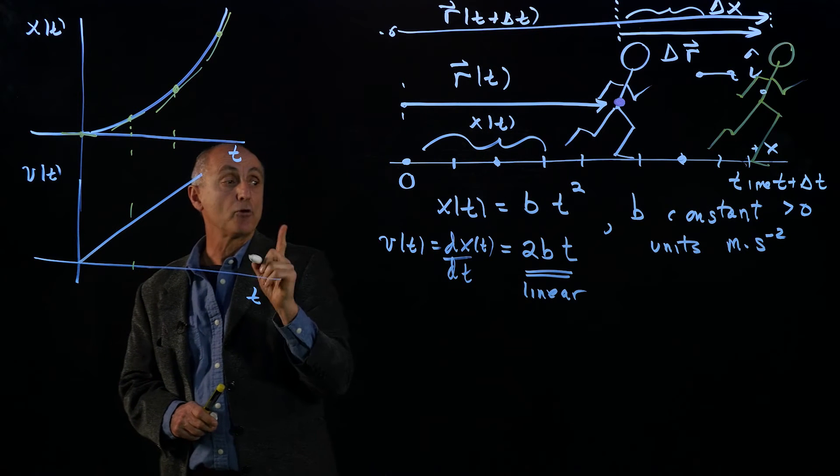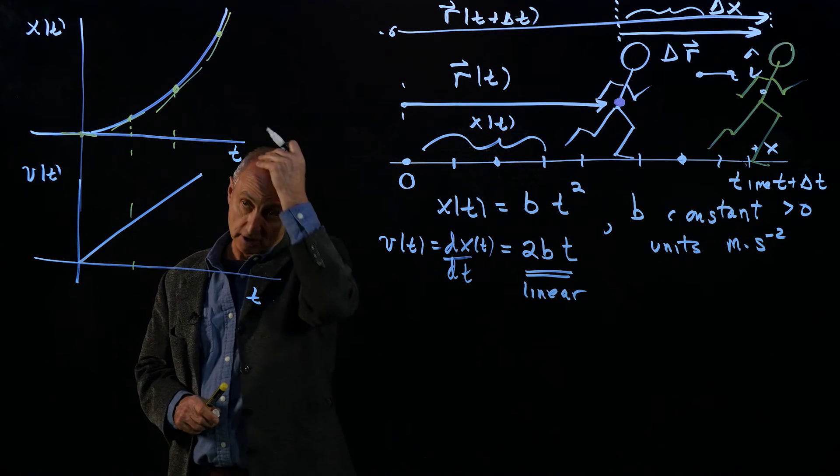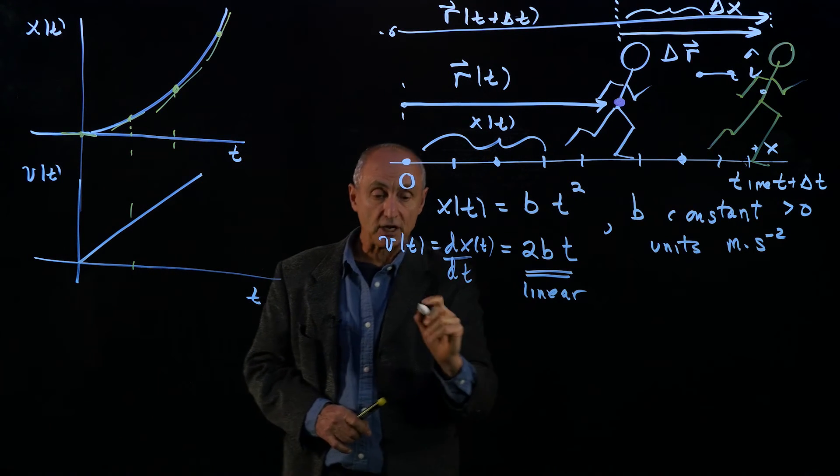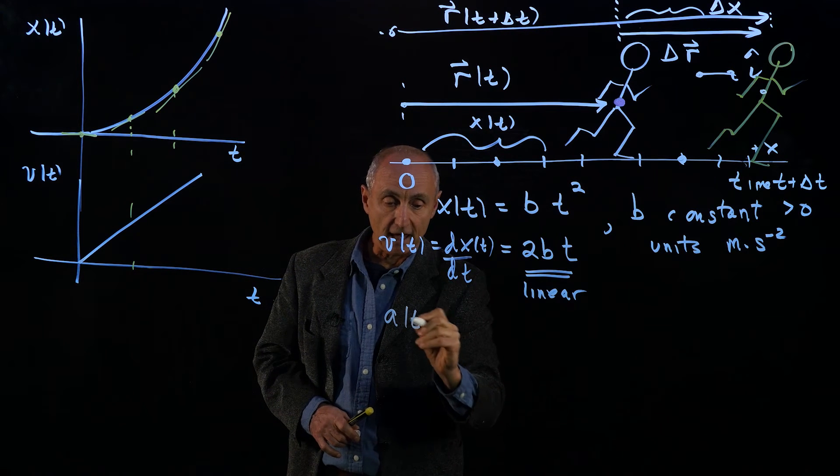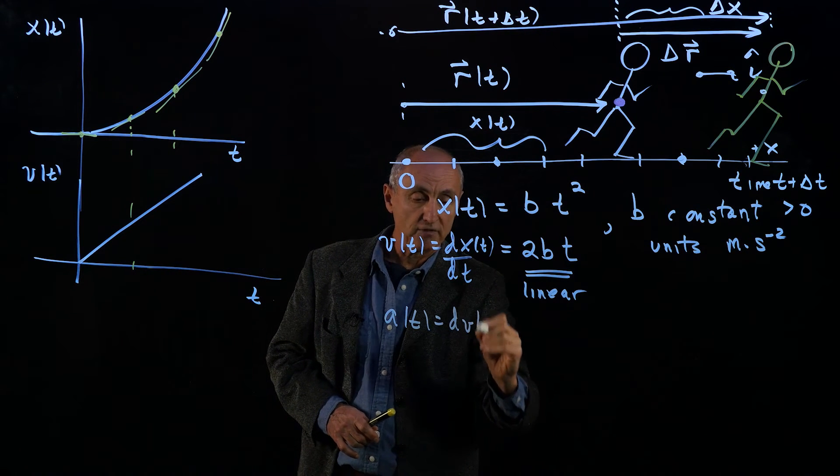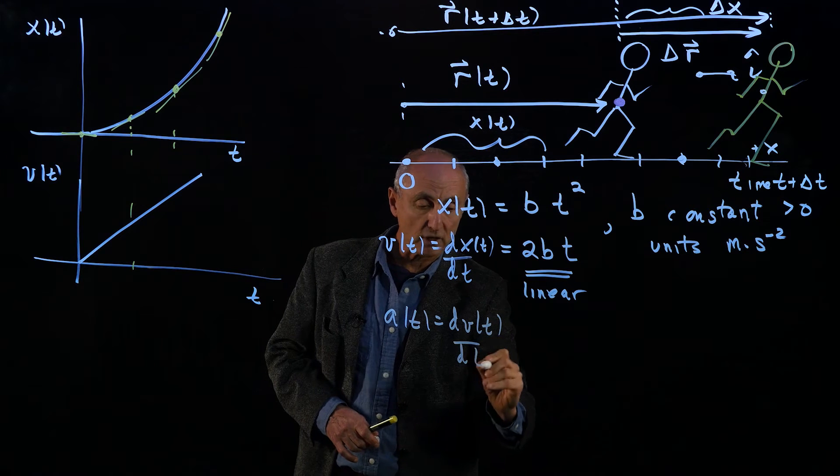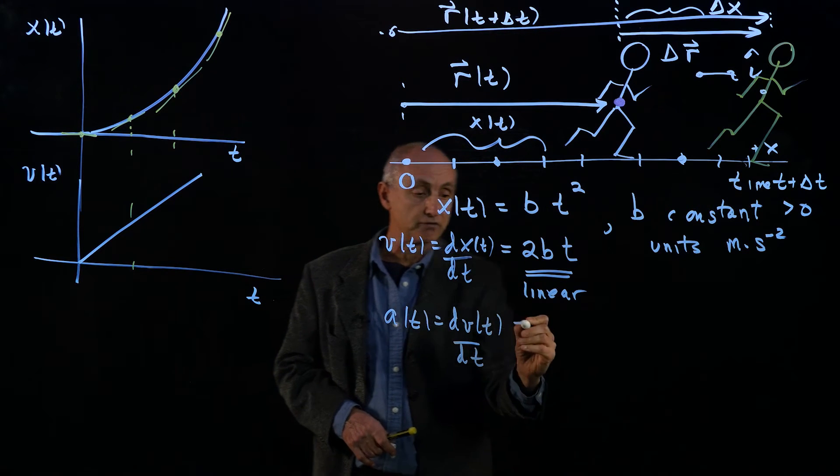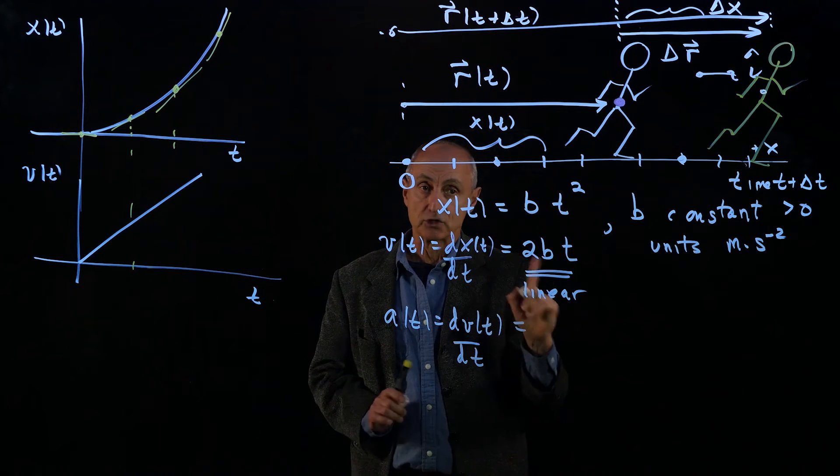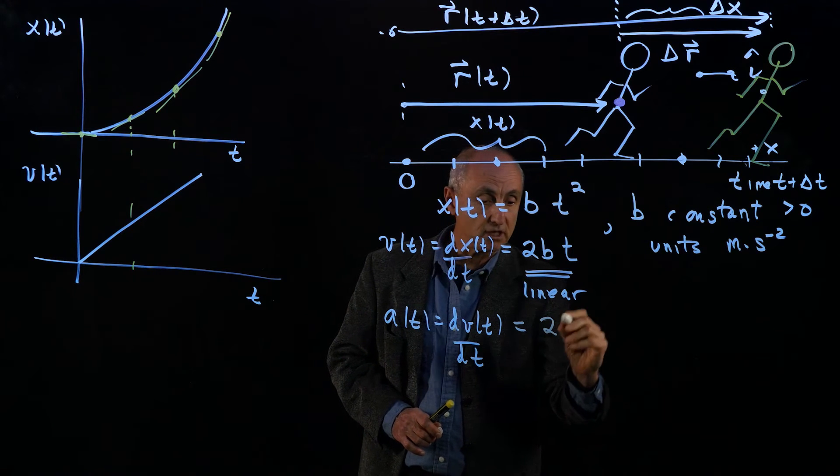And the slope here of this function will be now the acceleration. So a(t) is the derivative of the component of the velocity function as a function of time. And this derivative is quite easy. It's just simply 2b.